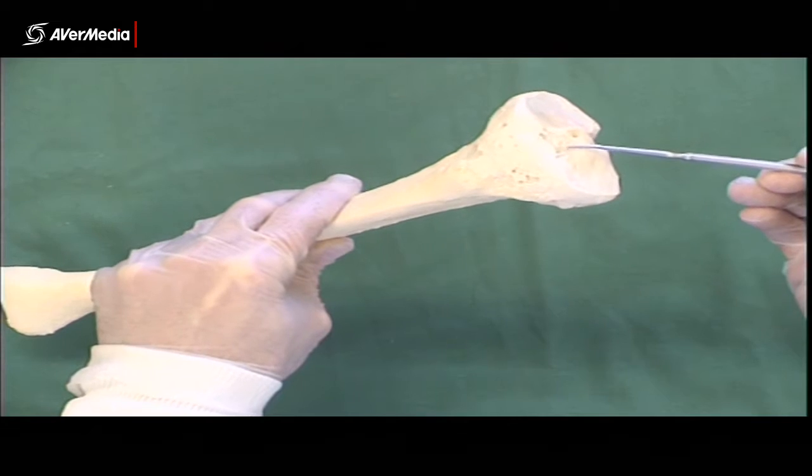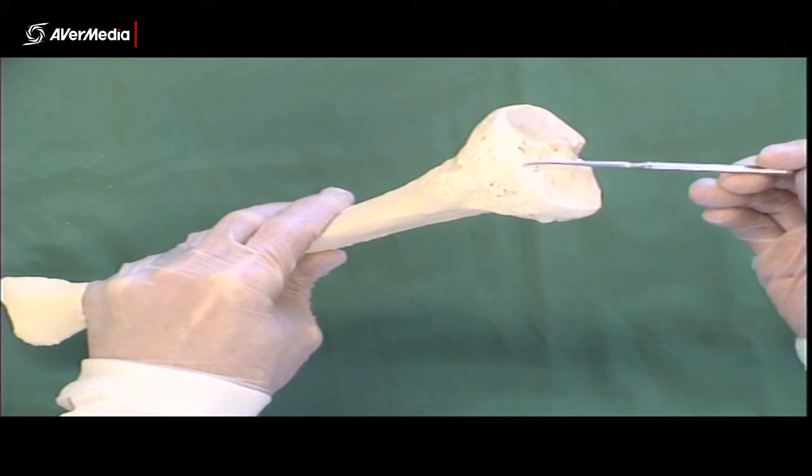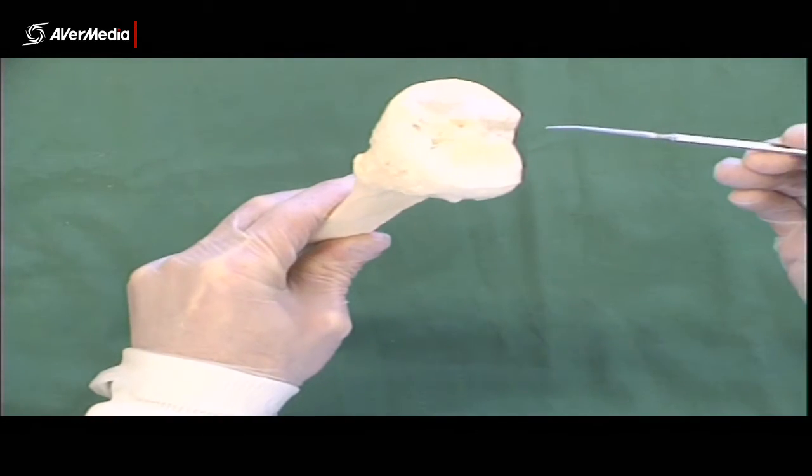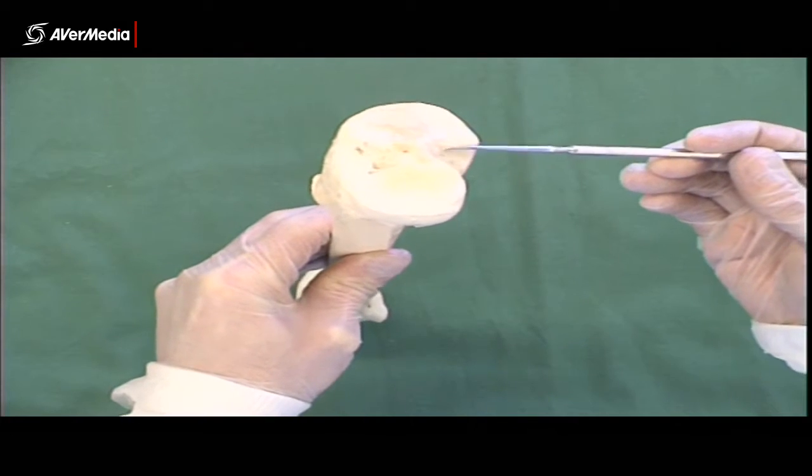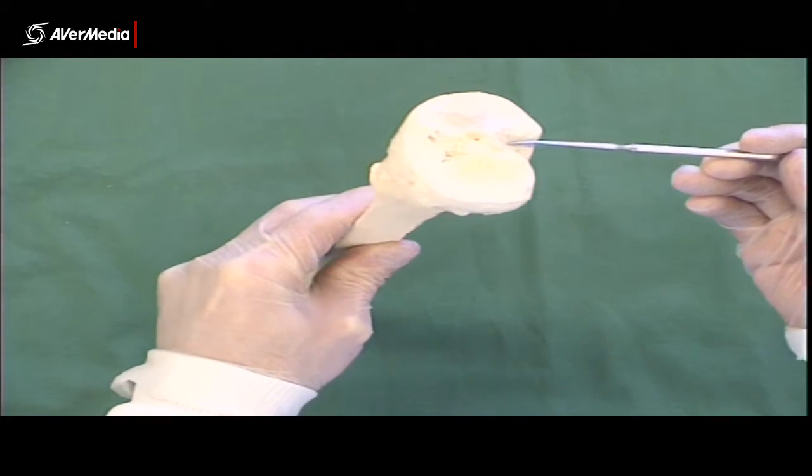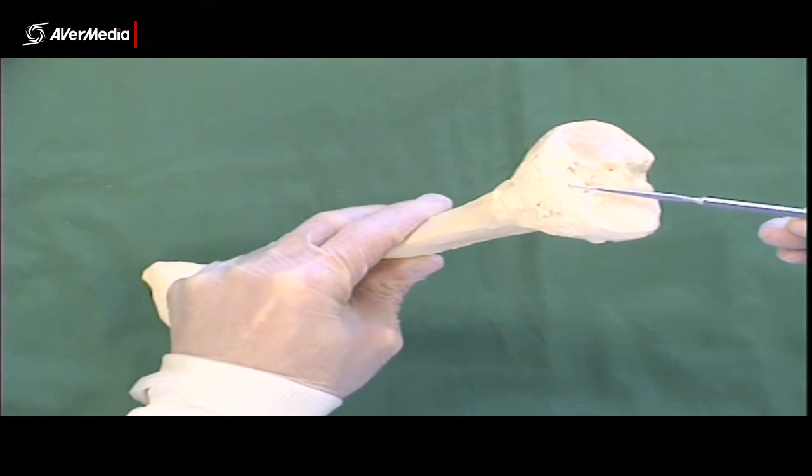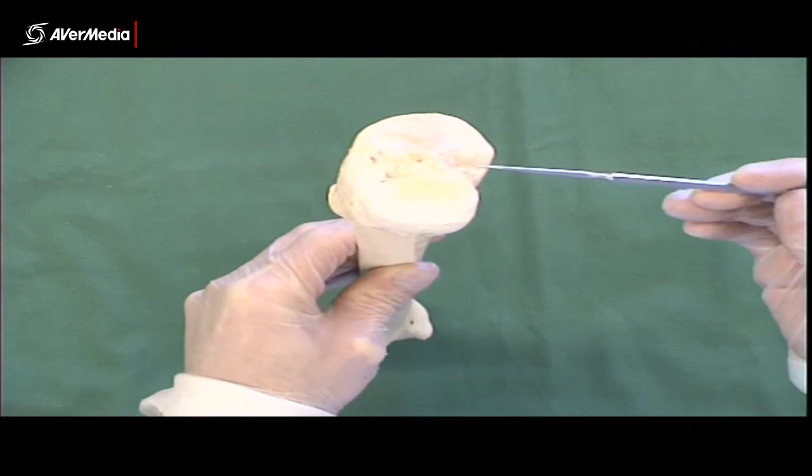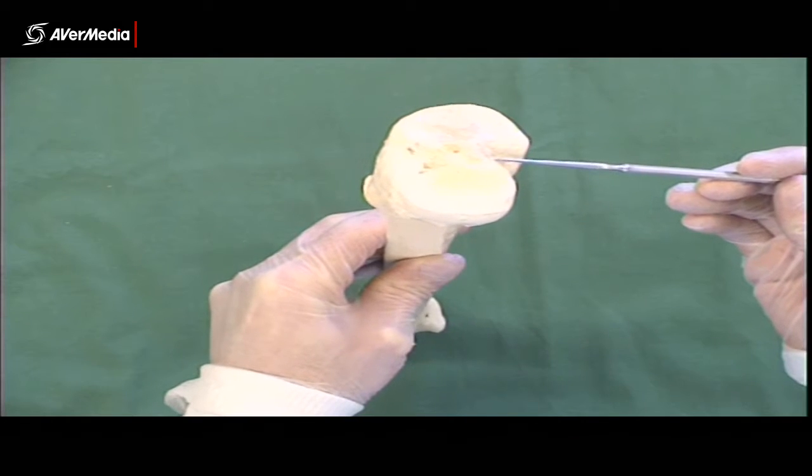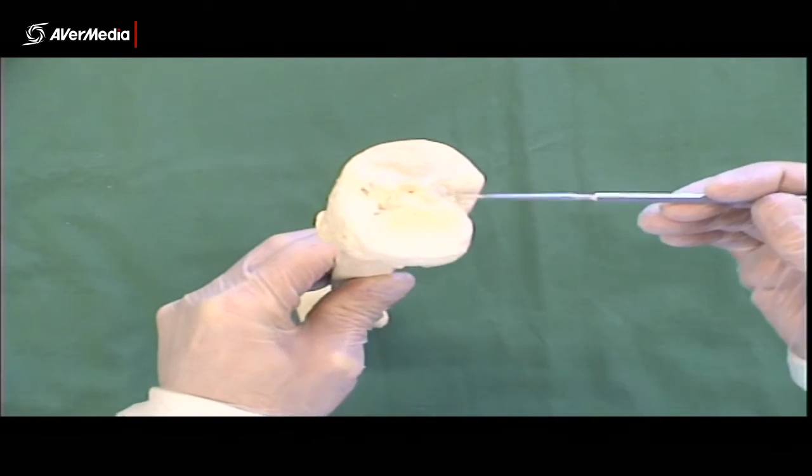Then on the anterior aspect, we have an anterior intercondylar area, and posteriorly, a posterior intercondylar area. And what attaches to the anterior intercondylar area? The anterior cruciate ligament, brilliant, and then the posterior? The posterior cruciate ligament, yeah, good stuff.